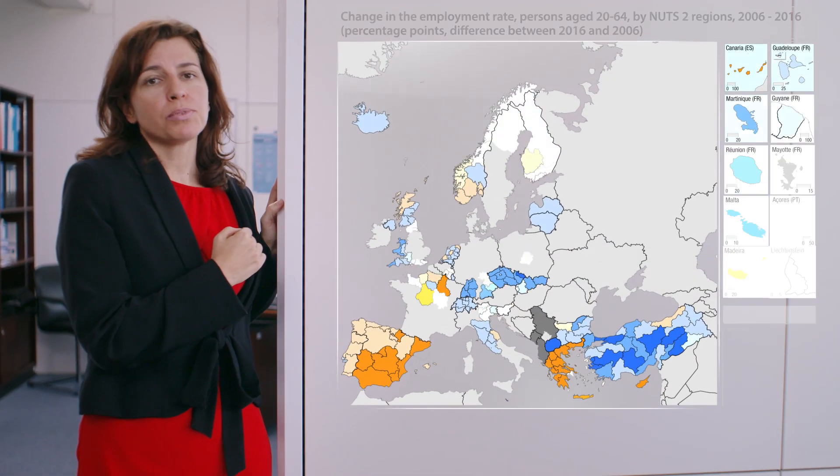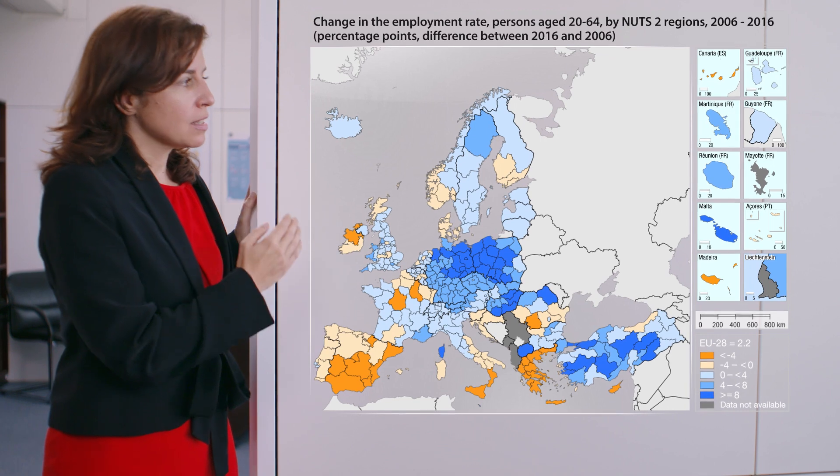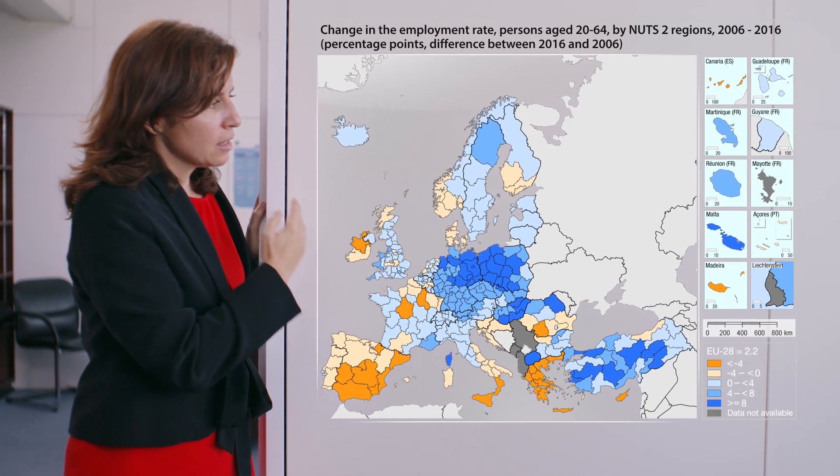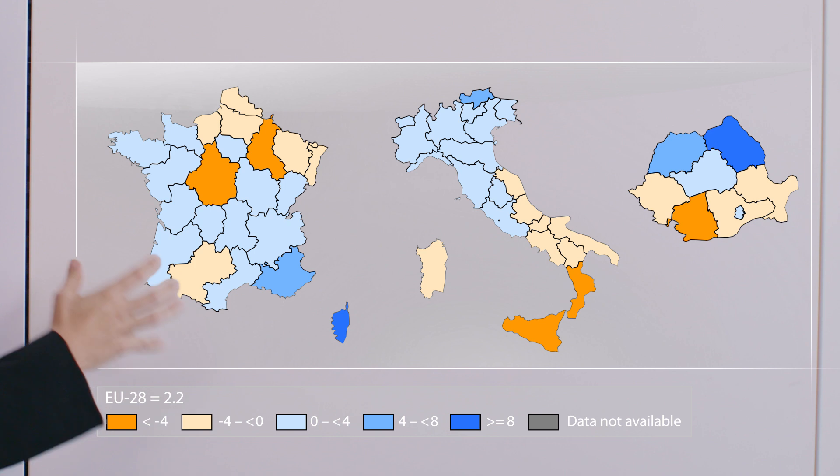It is also interesting to see how the employment rate evolved in the recent period. This map shows the change in employment rate between 2006 and 2016. As you can see, in some countries like Italy, France or Romania, this map is very colourful, indicating that there are both increasing and decreasing employment rates within the same country. Developments in this period were anything but smooth due to the global economic and financial crisis. If you would like to see how a specific region evolved, you can use the regions and cities illustrated data visualization tool available from the Eurostat website, which will be introduced in another video together with the Statistical Atlas.